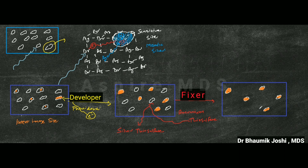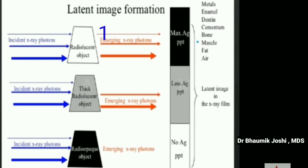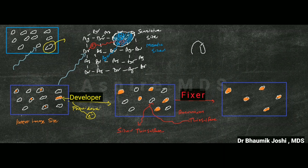This is the final image we get on the radiograph. The areas where the image is formed are the radiolucent-appearing areas on the film, whereas the cleared-out areas are the radiopaque areas. In radiolucent objects, x-rays pass through completely giving maximum silver precipitation; in partially transmitting objects there is less silver precipitate; and in radiopaque objects no x-rays pass through, so the image will appear without any silver precipitate.